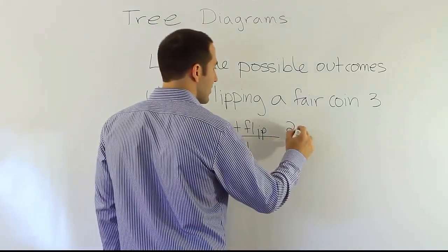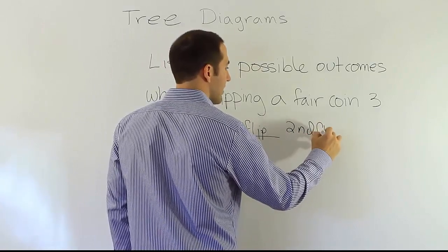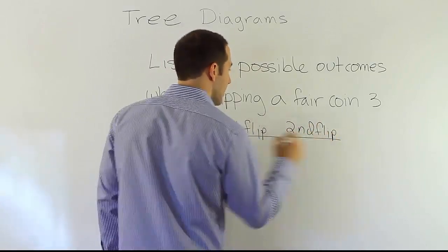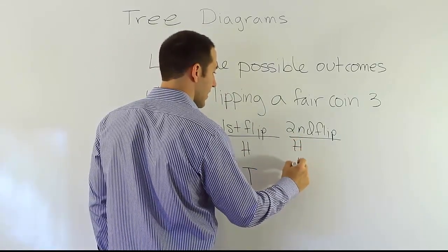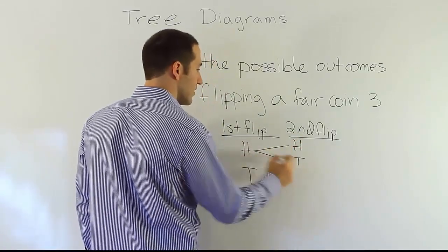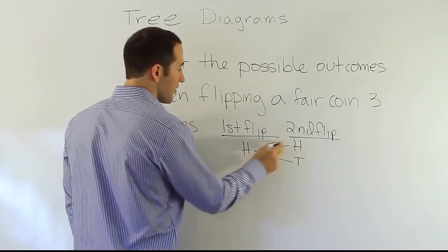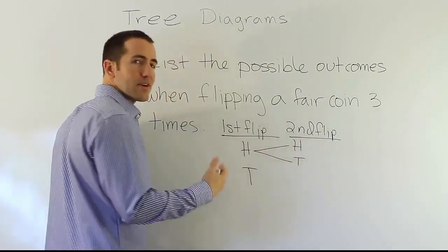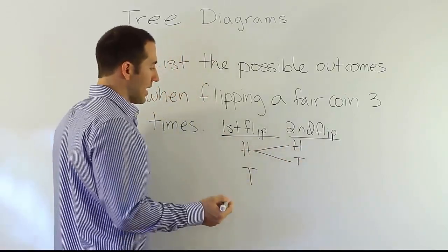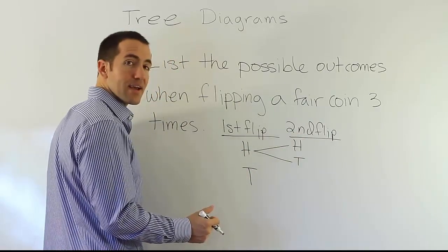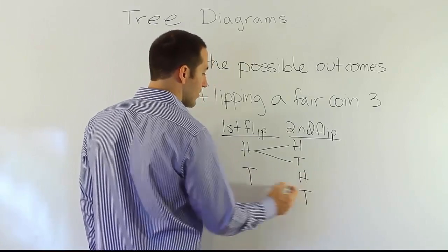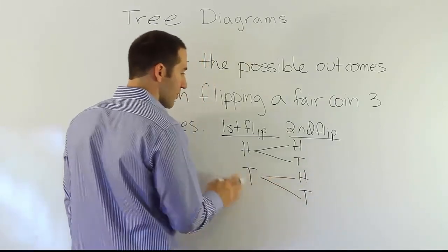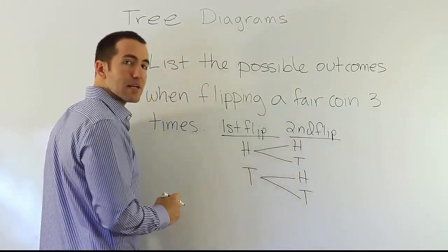Now, for the second flip, we have the same kind of thing. Let's say the first flip turned out to be heads. The second flip could be heads or tails. So we're going to branch out from this heads to the two possible outcomes that could occur on the second flip. And likewise, if you flipped it first and got tails, then the second flip could turn out to be still either heads or tails. And so again, you would have from tails to heads, tails to tails as the possible outcomes.